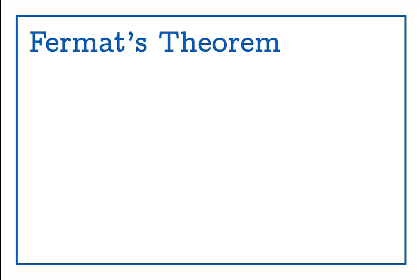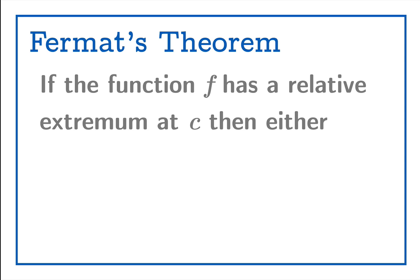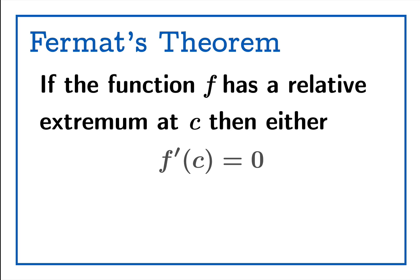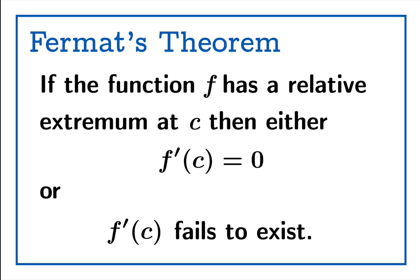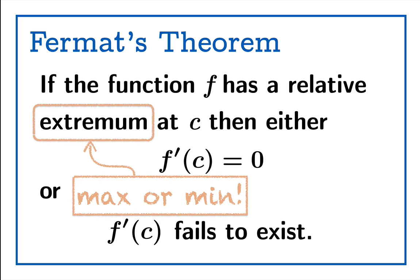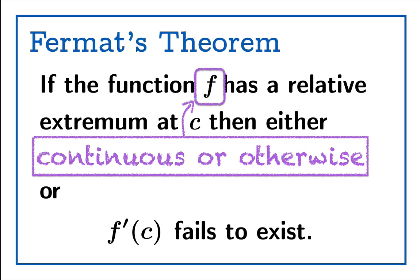That is indeed the content of what we call Fermat's theorem — yes, that's the same Fermat, but no, it's not that theorem. If the function f has a relative extremum at c, then either f'(c) equals zero or f'(c) fails to exist. This theorem refers to an extremum generally — it applies to both maxima and minima — and there's nothing in this theorem that demands f be continuous, so it applies to continuous or non-continuous functions.